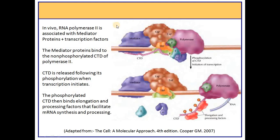One important in vivo transcription factor is the mediator protein, which acts as a mediator between transcription factors and transcription regulatory factors. The mediator protein binds to the C-terminal domain of RNA polymerase 2. When TF2H is recruited and phosphorylates the C-terminal domain, RNA polymerase 2 is relieved from the mediator protein. This is followed by binding of elongation and processing factors, and the release of the C-terminal domain causes RNA polymerase to initiate transcription.